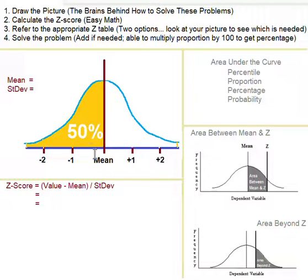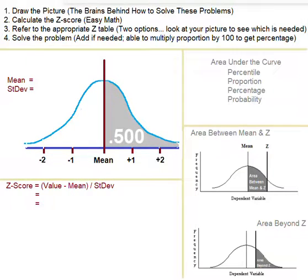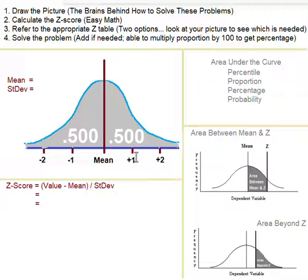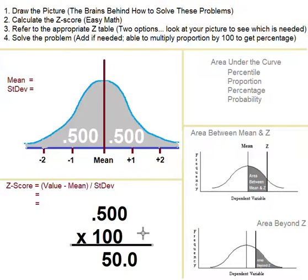We have 50% below the mean and 50% above the mean. In terms of proportions, that's 0.500 above the mean and 0.500 below the mean. If we add up all the area under the curve, that's 0.5 plus 0.5, which equals one. So proportions range from zero to one and percentages range from zero to a hundred.